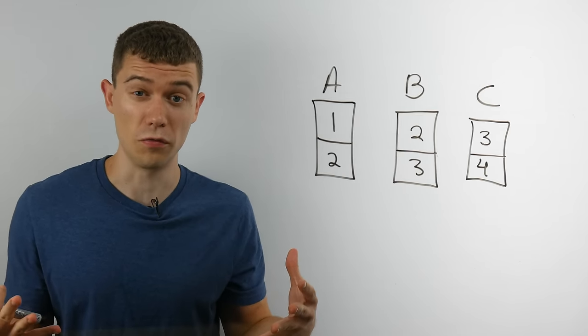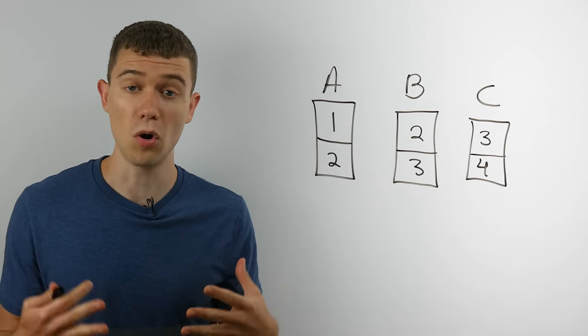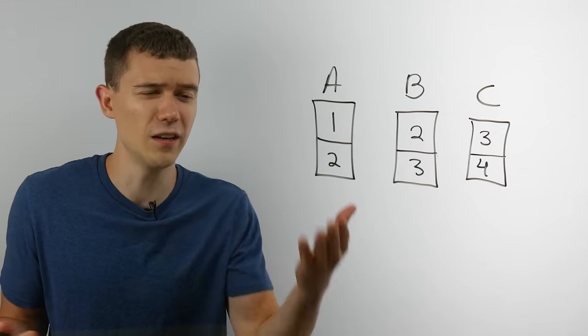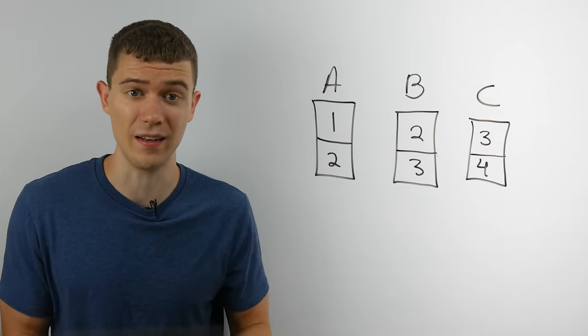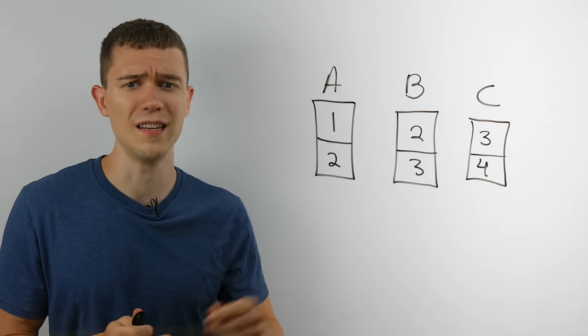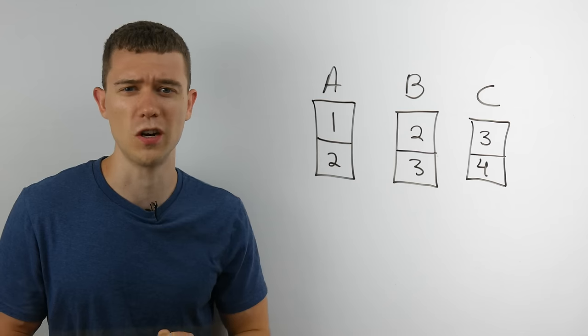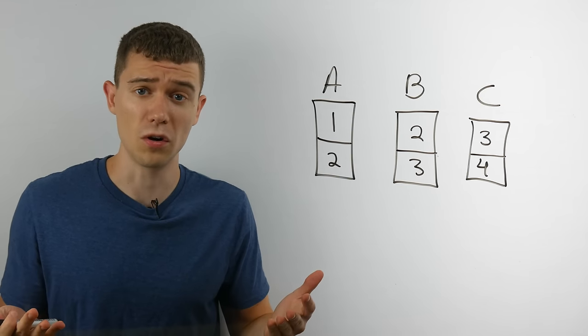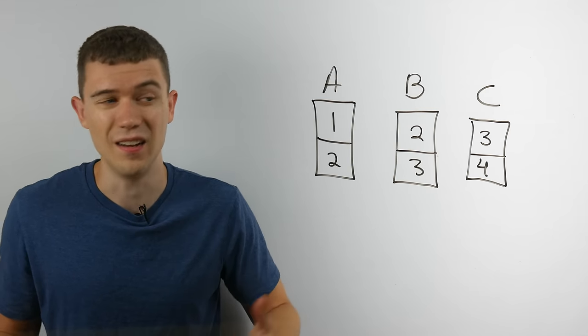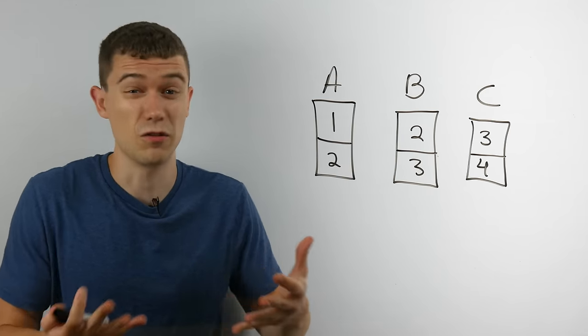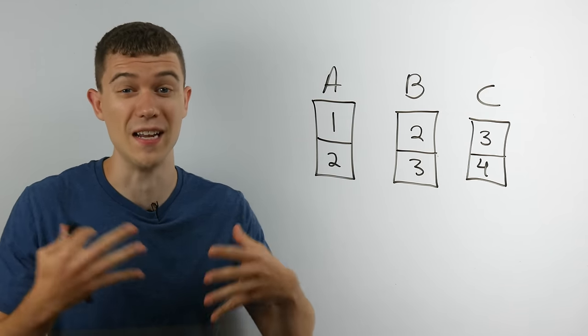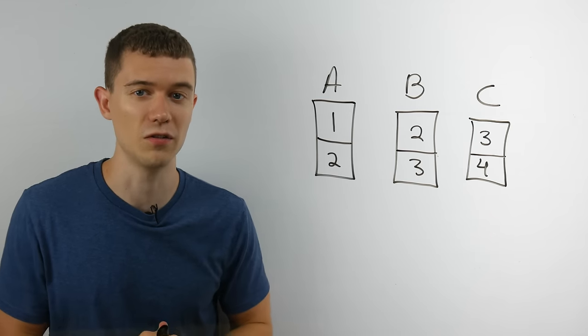Let's say the number one is called first. A is the only card that has that number. A all of a sudden has this huge lead, this huge advantage. No one can get that one except for A. Same with C. If four is called, huge advantage for C. That's its own market share. That's its own competitive advantage. Now what if two is called? Well, that's great for B, but it's also great for A. What if three is called? That's great for B, but it's also great for C. B doesn't have this prime real estate on any number. It always shares with another card.